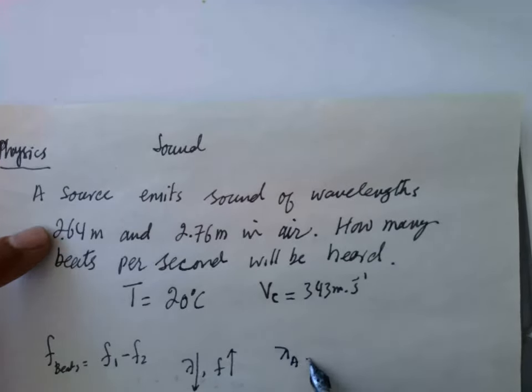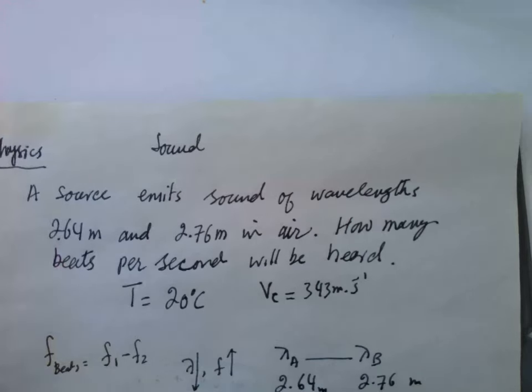Wavelength A and wavelength B. Wavelength A is 2.64 and wavelength B is 2.76 meters. So this is smaller, that means this frequency is larger.